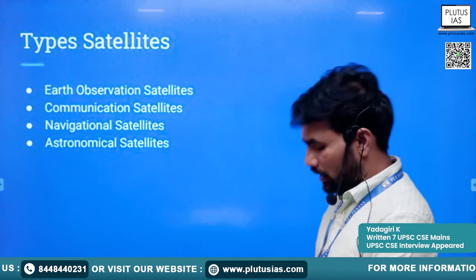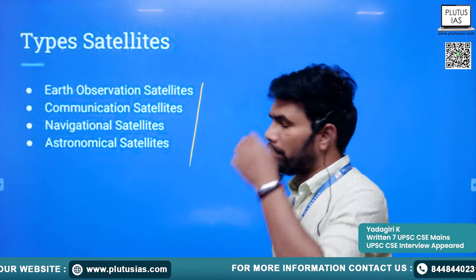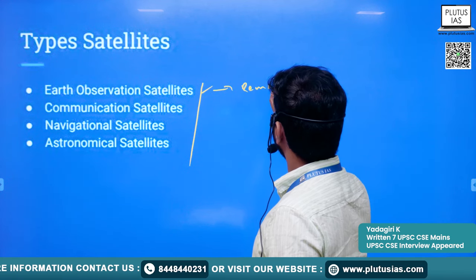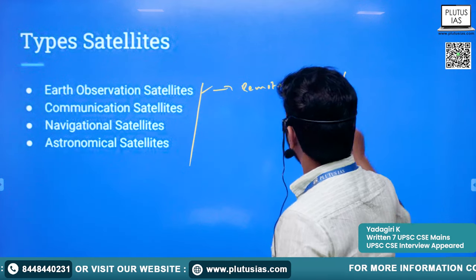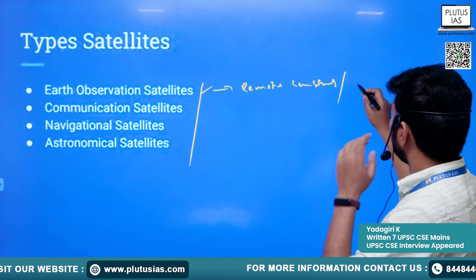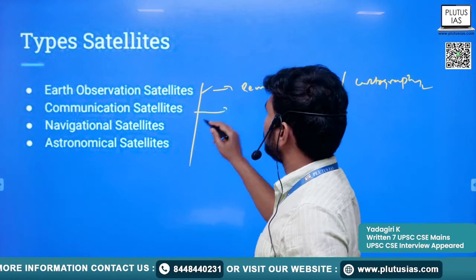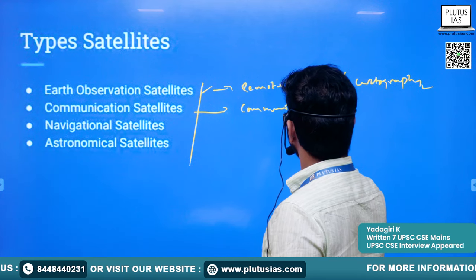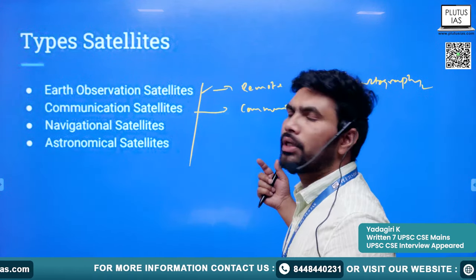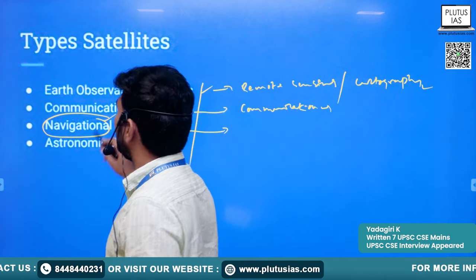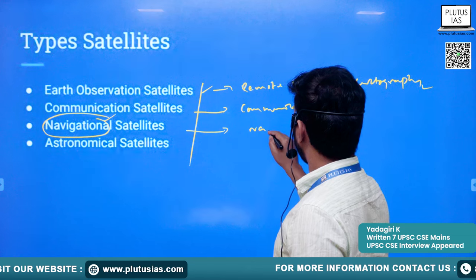Now we will understand the types of satellites. Satellites can be majorly divided into four types: earth observation satellites, which are very useful in remote sensing and cartography; communication satellites, used for communication including education and entertainment; navigational satellites, used for navigation of vehicles, civil aviation, and ships; and astronomical satellites, used to observe celestial bodies like stars and galaxies.